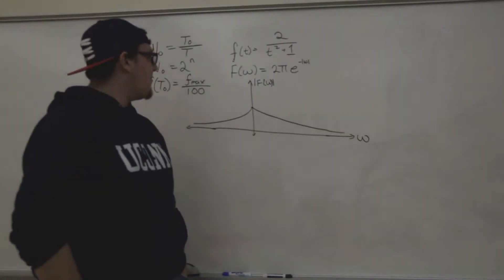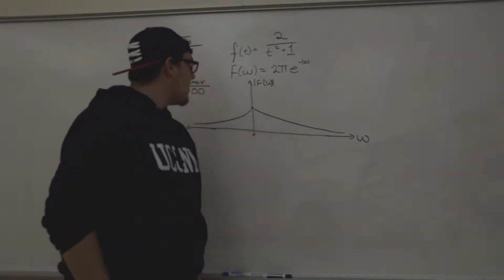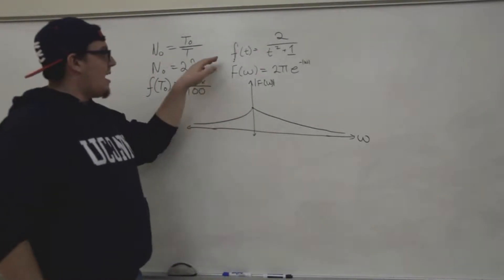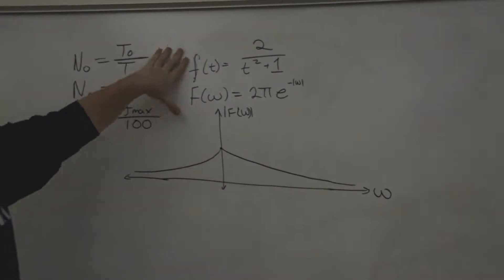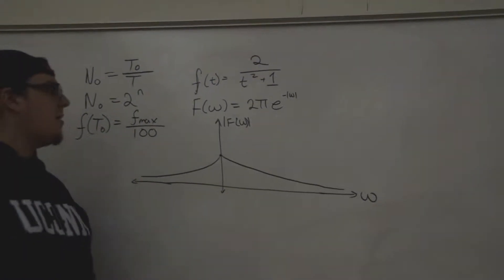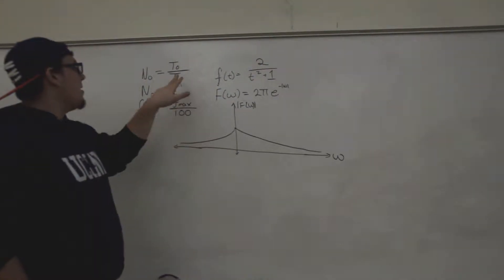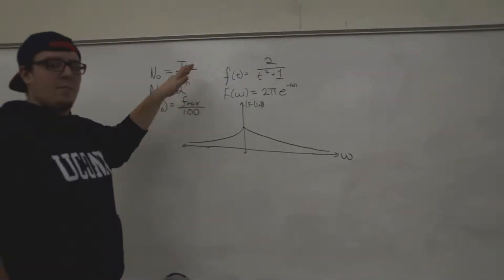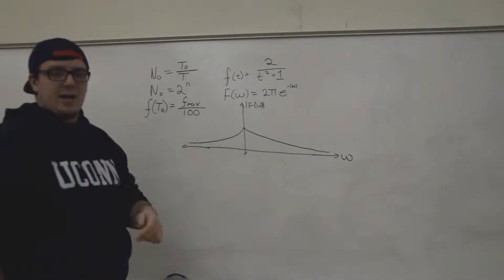This is Andrew with HKN, and I have another EC3101 problem. Today we're given a time function equal to 2 over t squared plus 1, and we are going to take a discrete Fourier transform of this function. In doing so, we want to find T, which is the maximum sampling time that we can have.